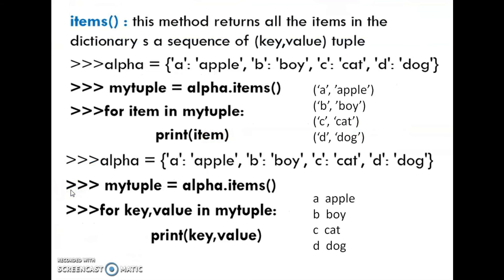Next one, items function. This method returns all the items in the dictionary as a sequence of key-value tuples. Alpha is equal to: a-apple, b-boy, c-cat, d-dog. My tuple is equal to alpha.items.